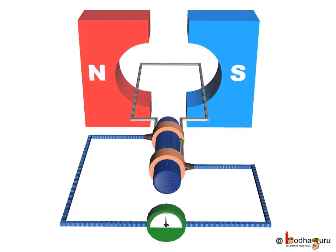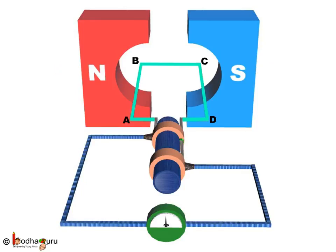Let us see the working of a simple electric generator, but first let us understand a simple model. An electric generator consists of a rotating rectangular coil which we have represented by coil ABCD here, and this is placed between the two poles of a permanent magnet. The placement is such that the coil is perpendicular to the magnetic field.